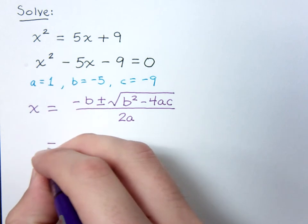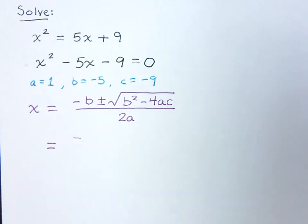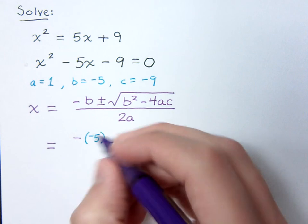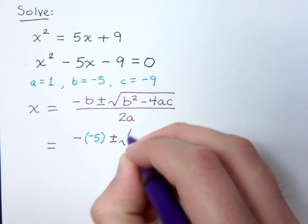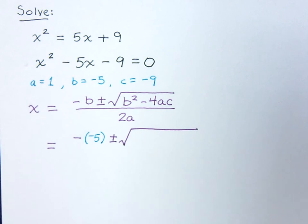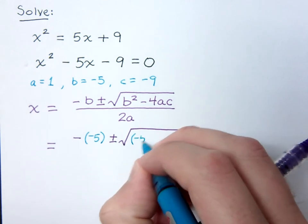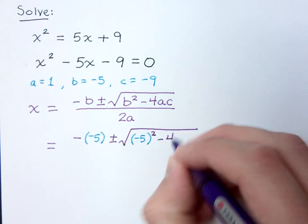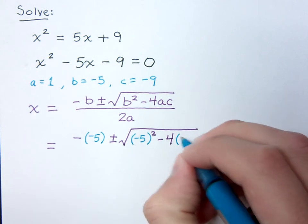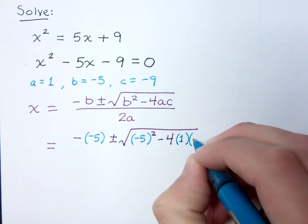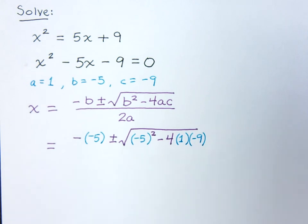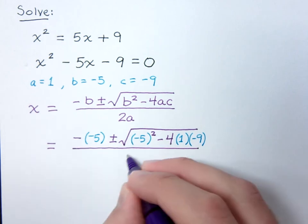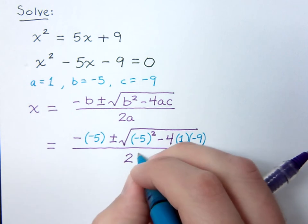So, the first part here is negative b. Now, b is negative 5, so we're going to plug that in. There's negative 5 plus or minus the square root. So, this is negative 5 squared minus 4 times a. In this case, a is equal to 1. And c is equal to negative 9. And this is all over 2 times a. A, in this case, is 1.